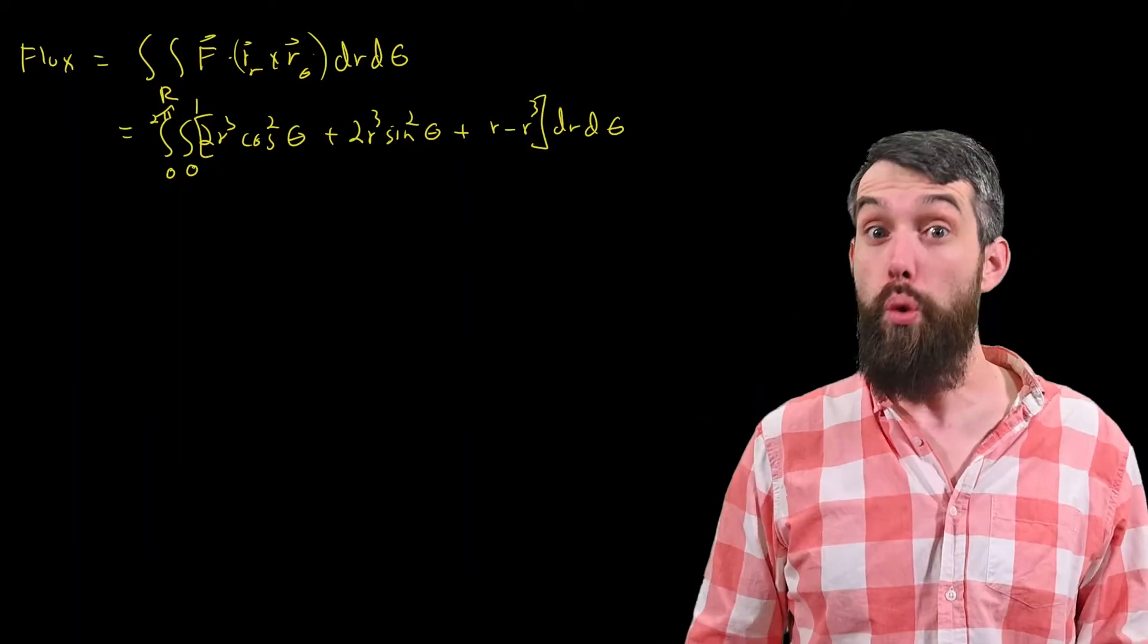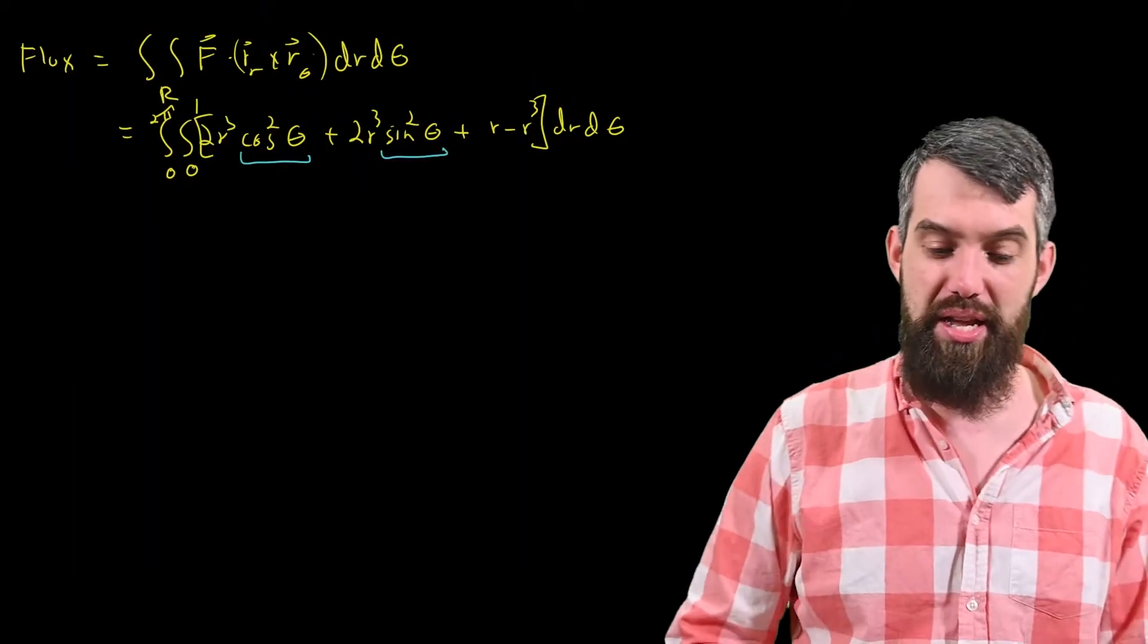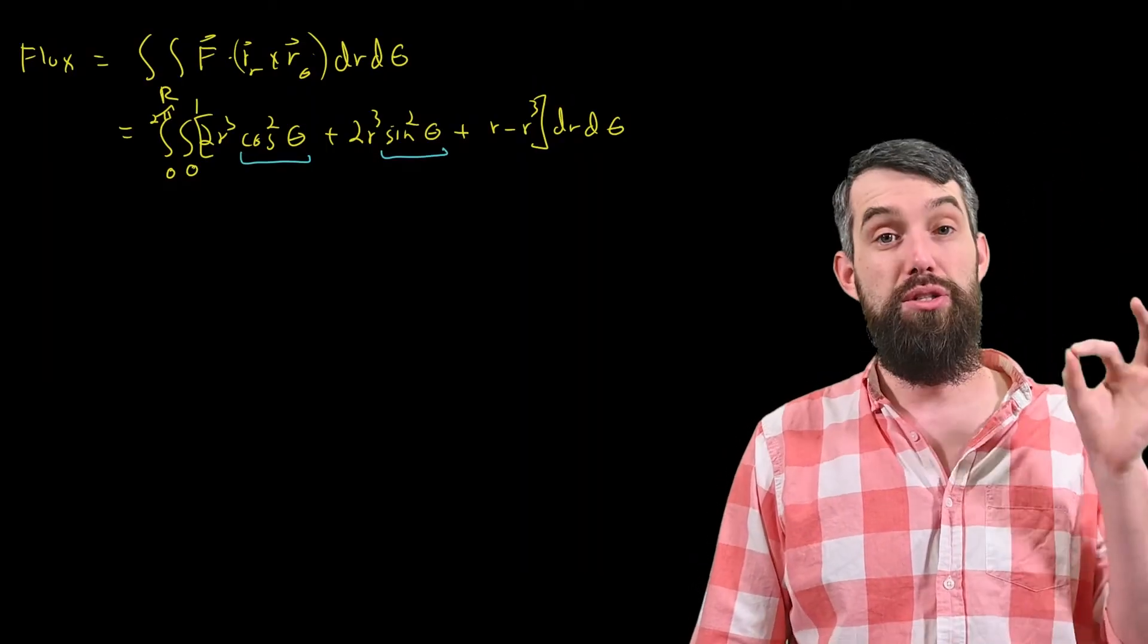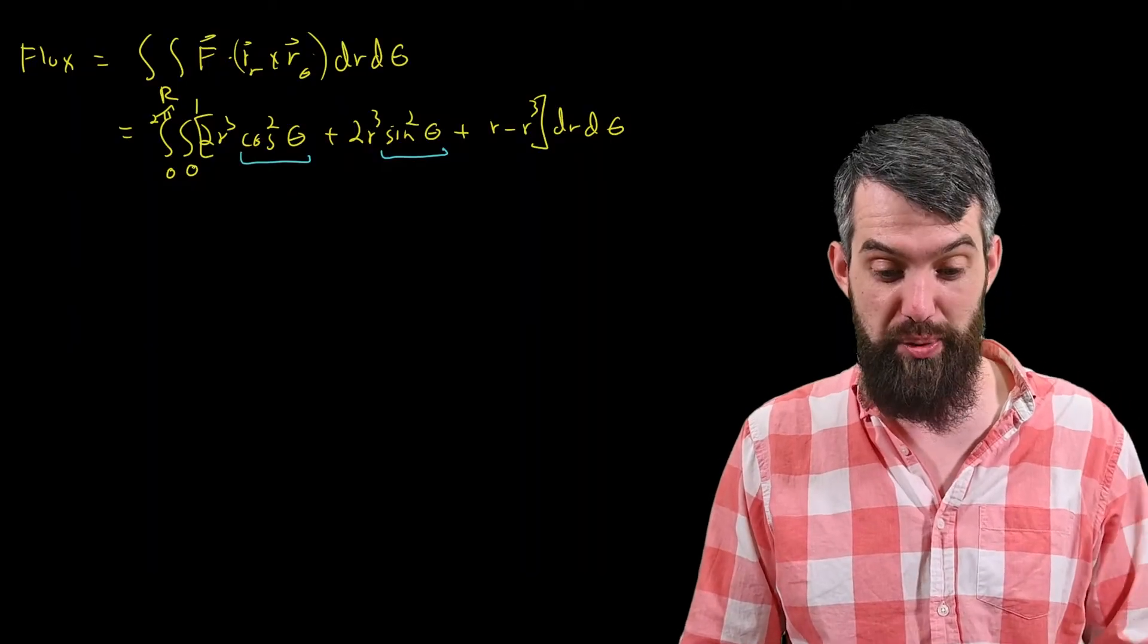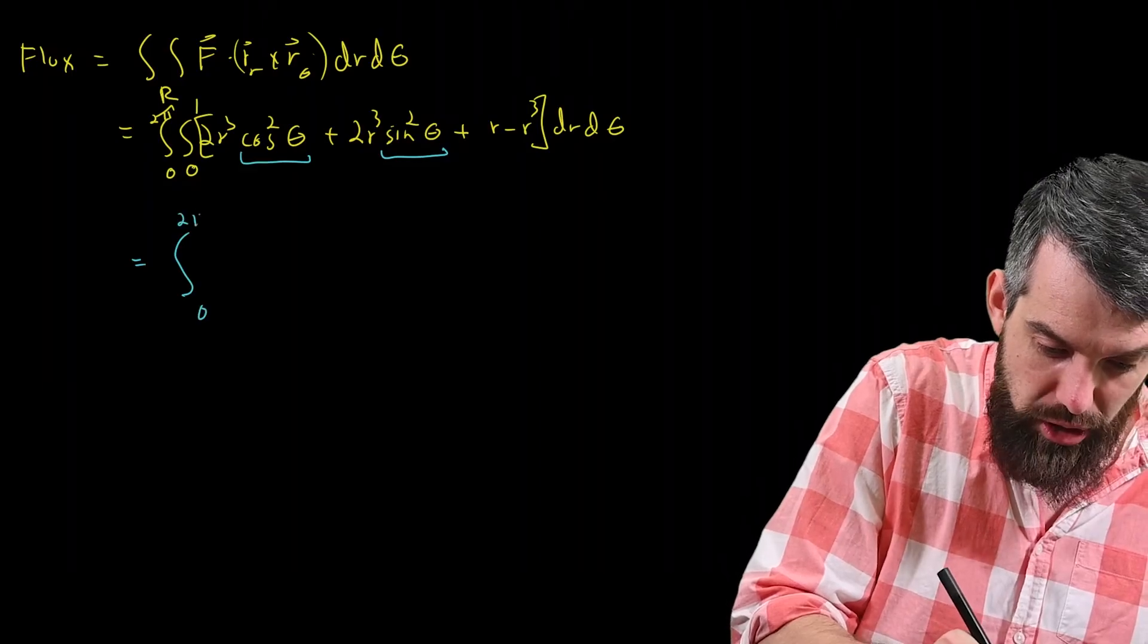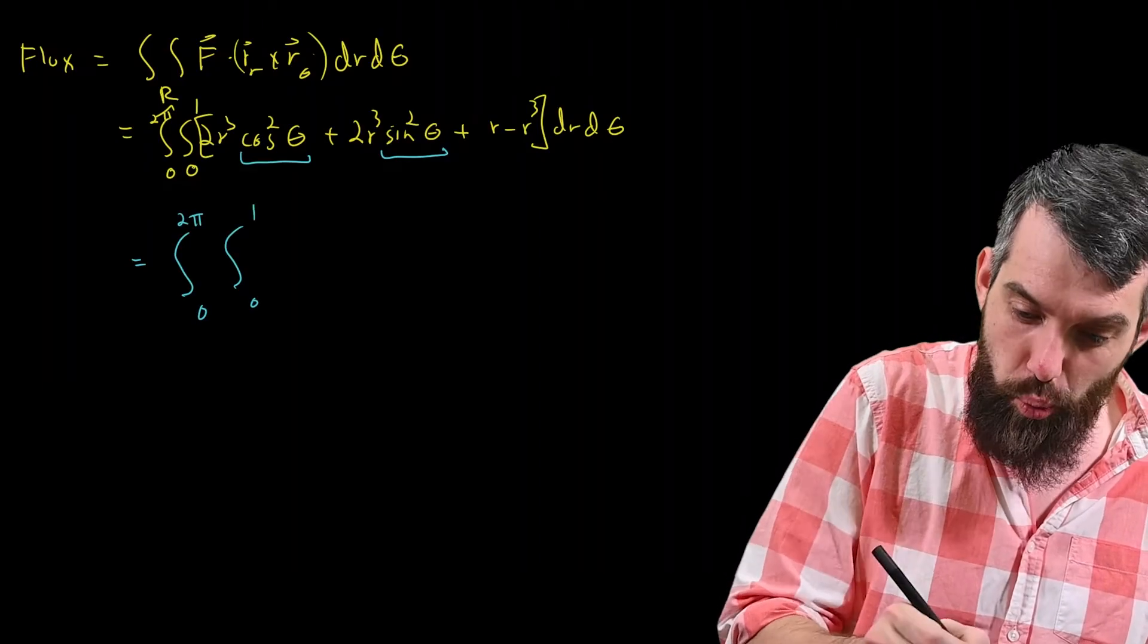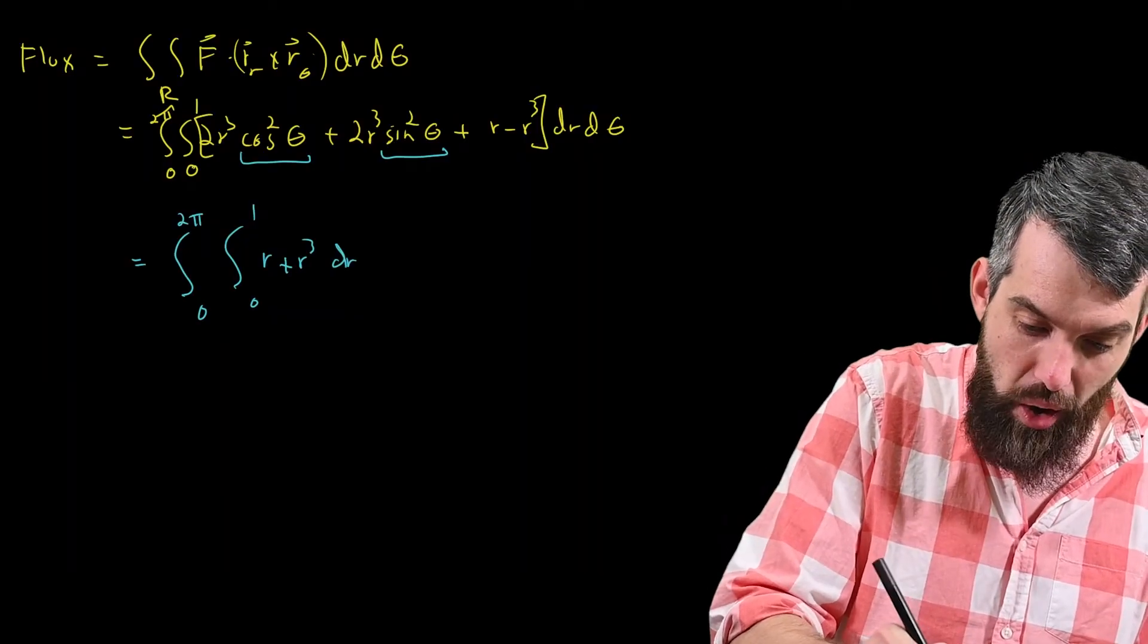I'll slip that in there. Now I think I can do quite a bit of simplification here. So I have a cosine squared and a sine squared, that's going to come together. That's going to leave me with 2 r cubed. But I also have another term with r cubed, which is a minus r cubed, so I think that the answer is 0 to 2 pi, 0 to 1, r plus r cubed dr d theta.